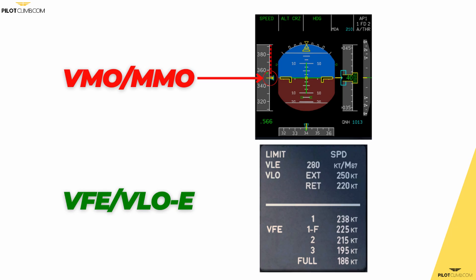The VMO, or MMO in case of Mach number — the VMO is expressed in knots and the MMO is the same speed but expressed in Mach number. It is the maximum speed that you should not exceed in any phase of flight. In an Airbus A320, the VMO and the MMO is represented by red and black squares on the speed tape.